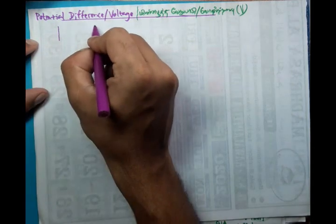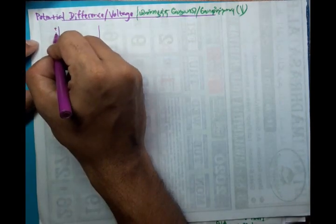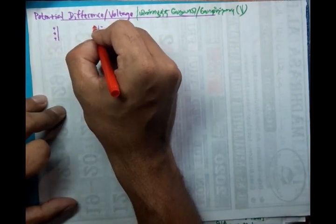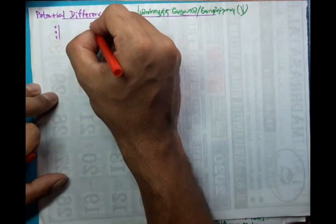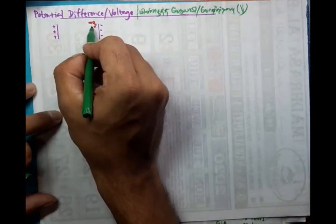In electric field we have already learnt about this. If you want a charge to move from one place to another, we need to create an electric field. If you keep a positive charge in this electric field, this is the negative charge like an electron, then it will travel and get attracted towards the positive side. So it will travel from here to here.